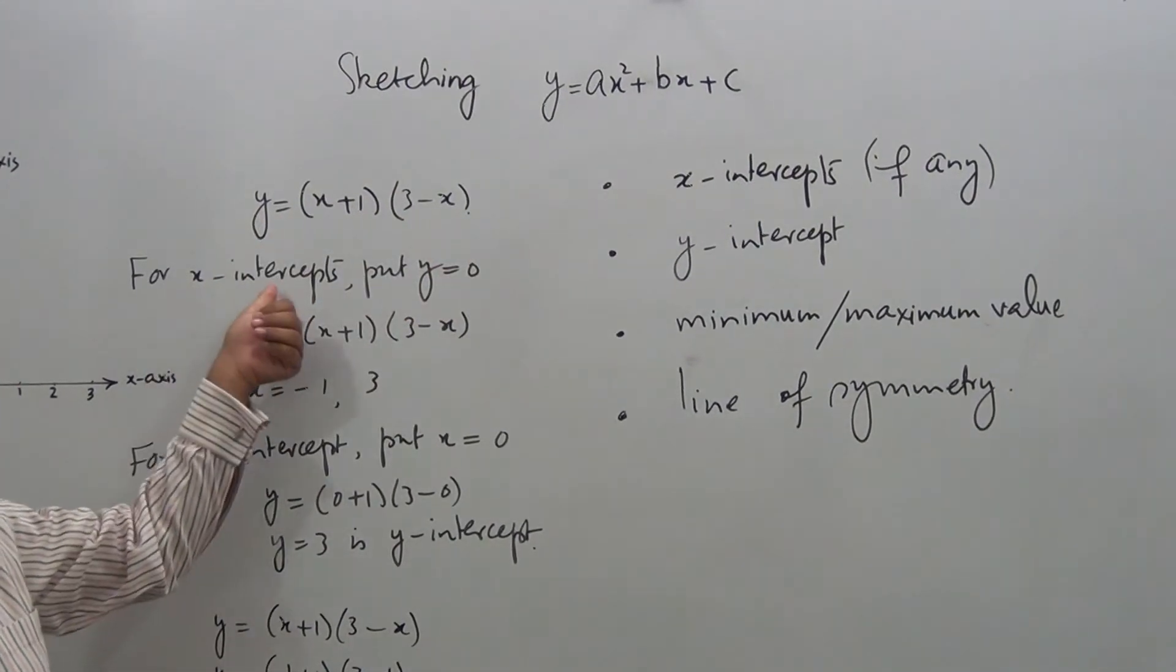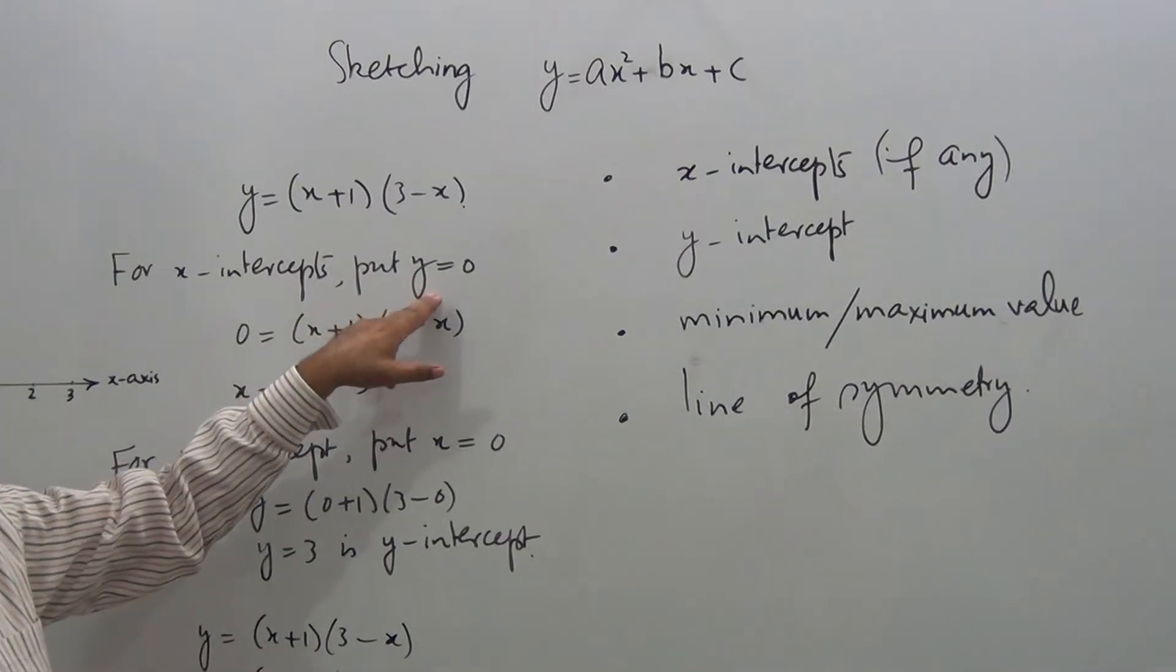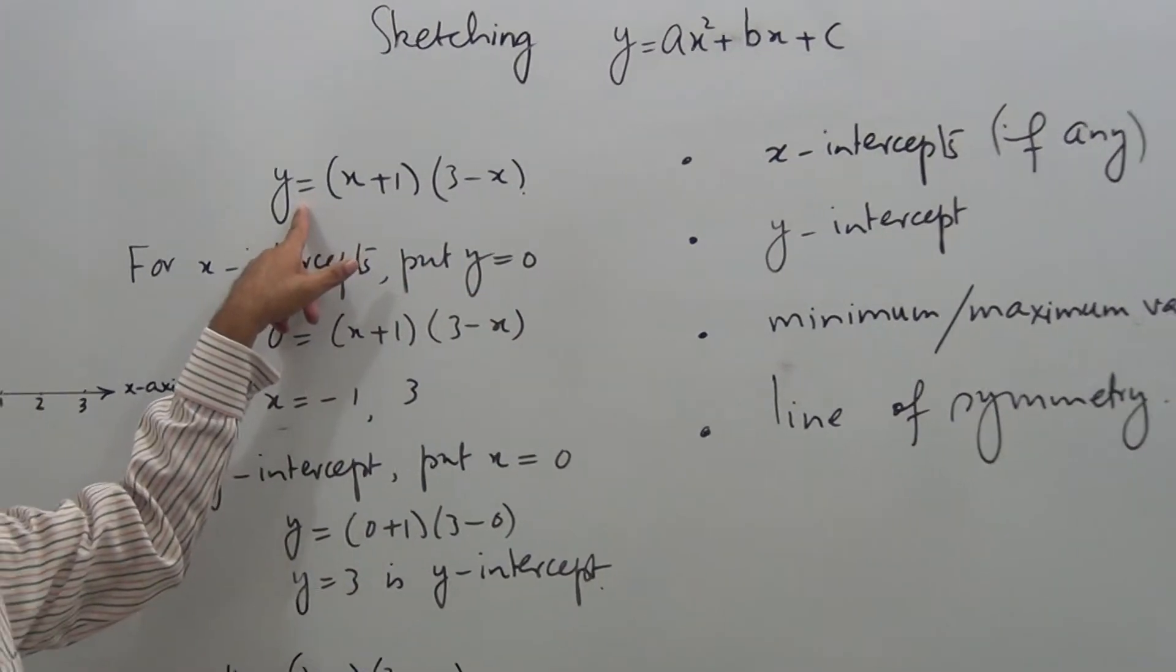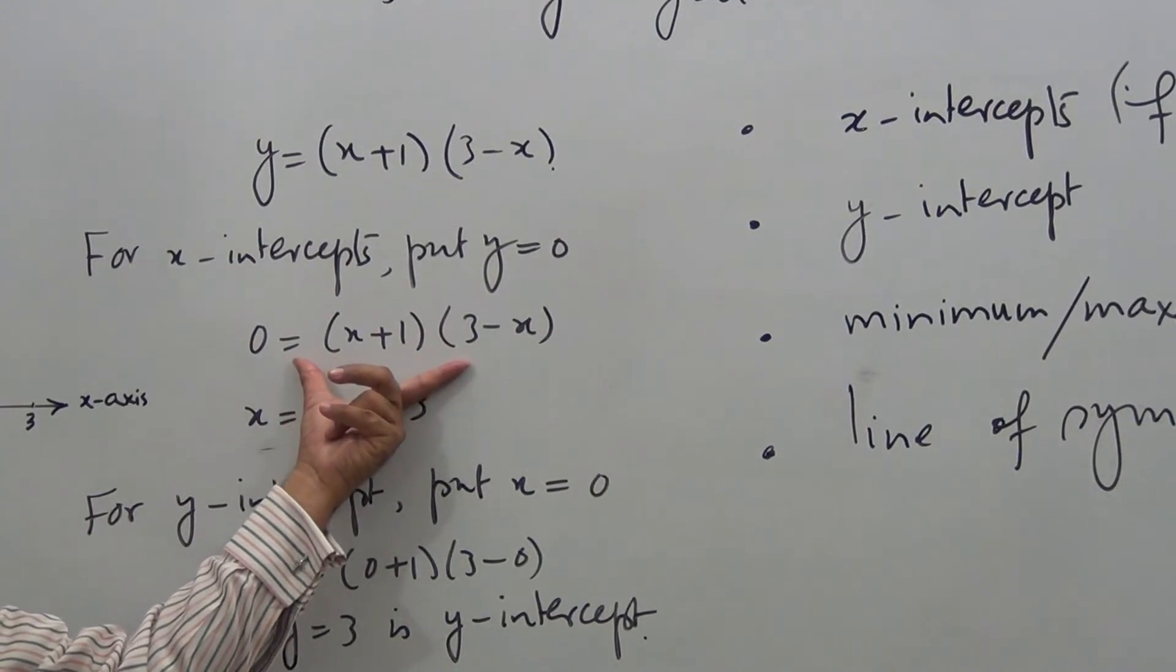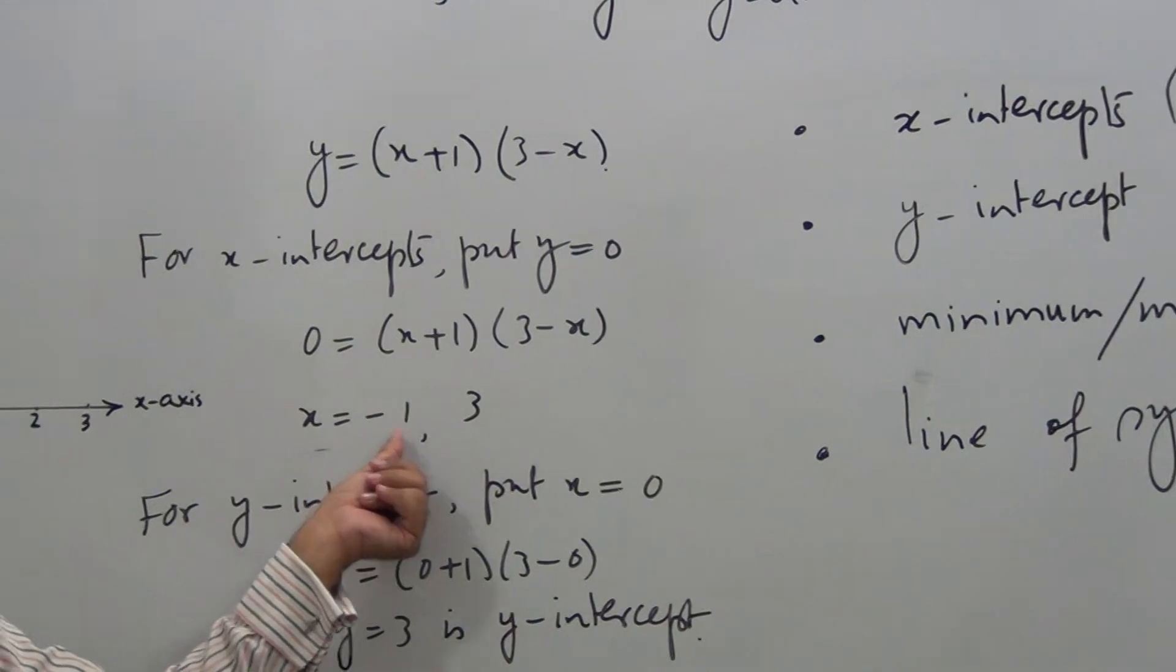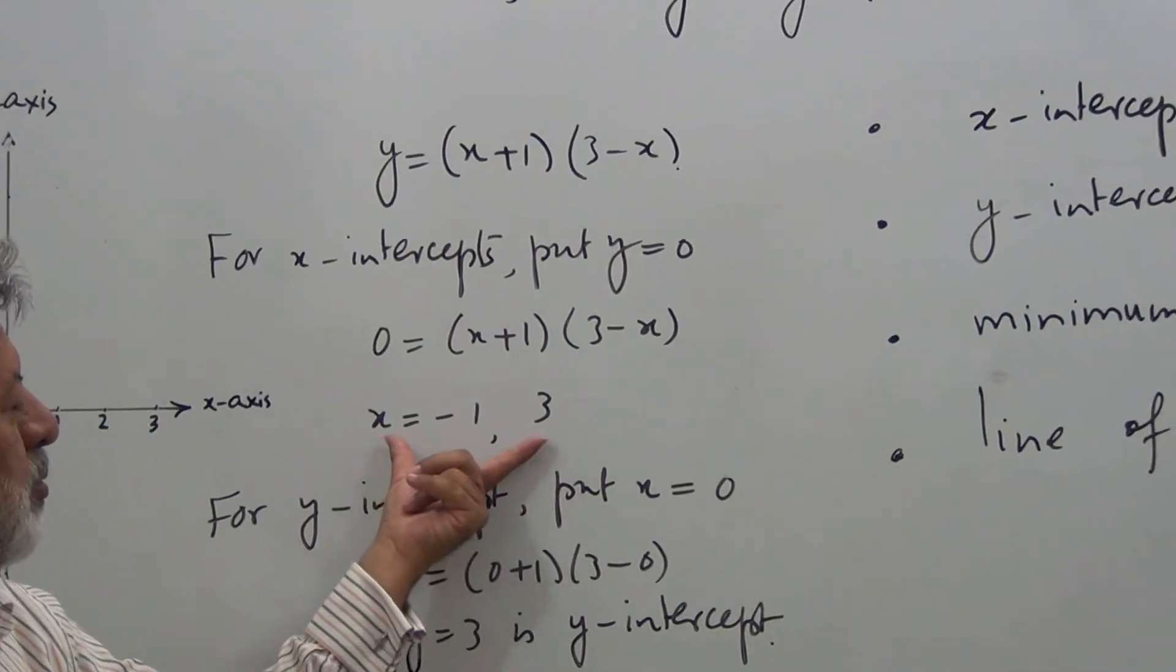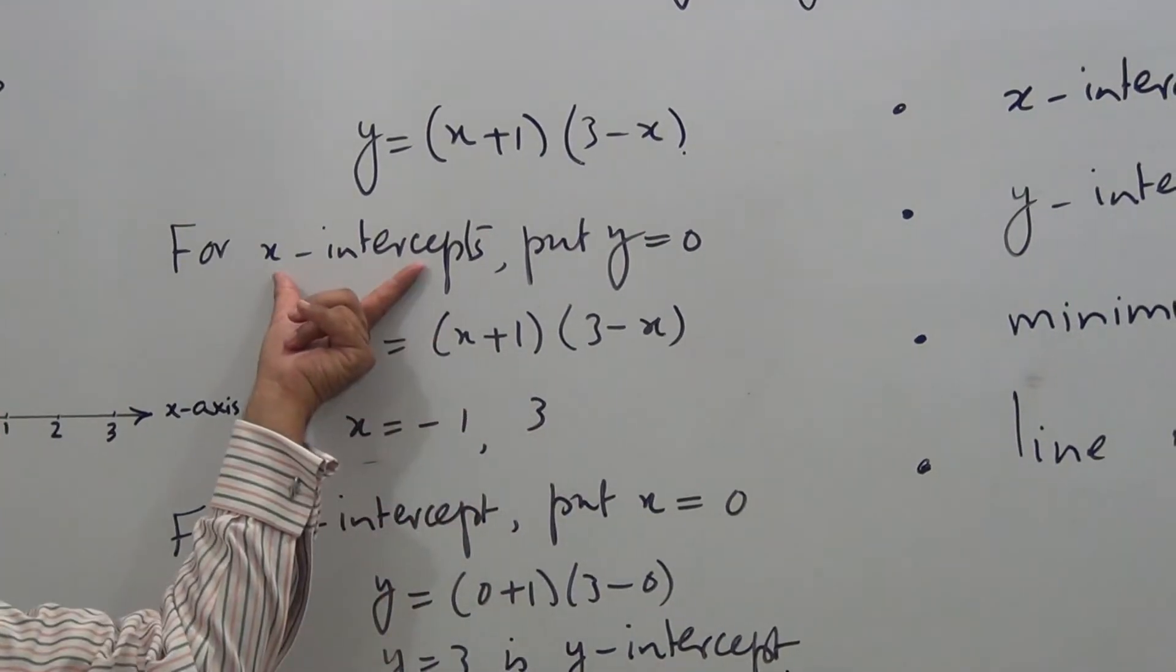In order to find x-intercepts, put y = 0. Then you have this equation, and when you solve this equation, the values of x are -1 and 3. These two values are x-intercepts.